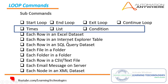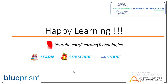In the next session we will explain each row in an Excel dataset, each row in an Internet Explorer table, each row in an SQL query dataset, each file in a folder, each row in a CSV or text file, email messages on the server, and nodes in an XML dataset. If you have any queries related to this concept, please post them in the comment section. Thank you for watching Automation Anywhere RPA video tutorials. I will see you in the next session. Bye-bye.